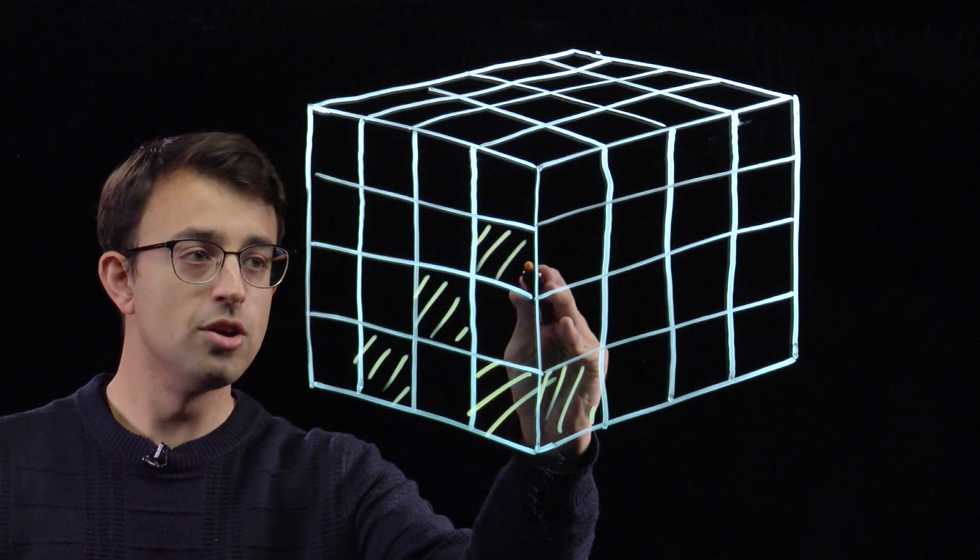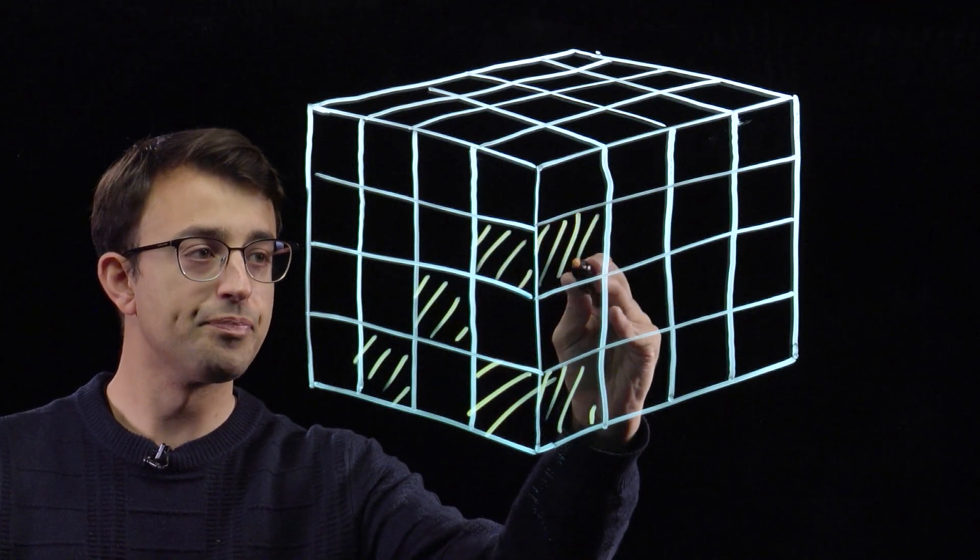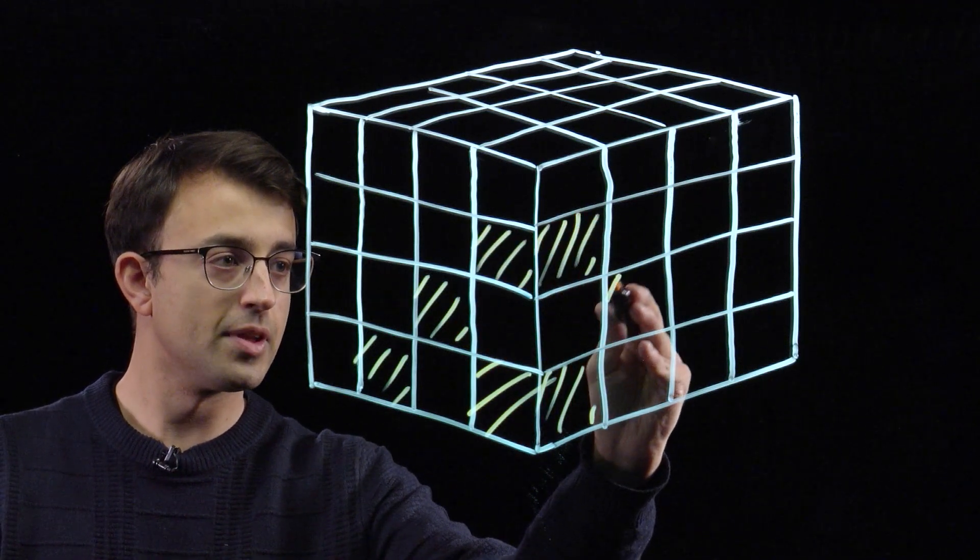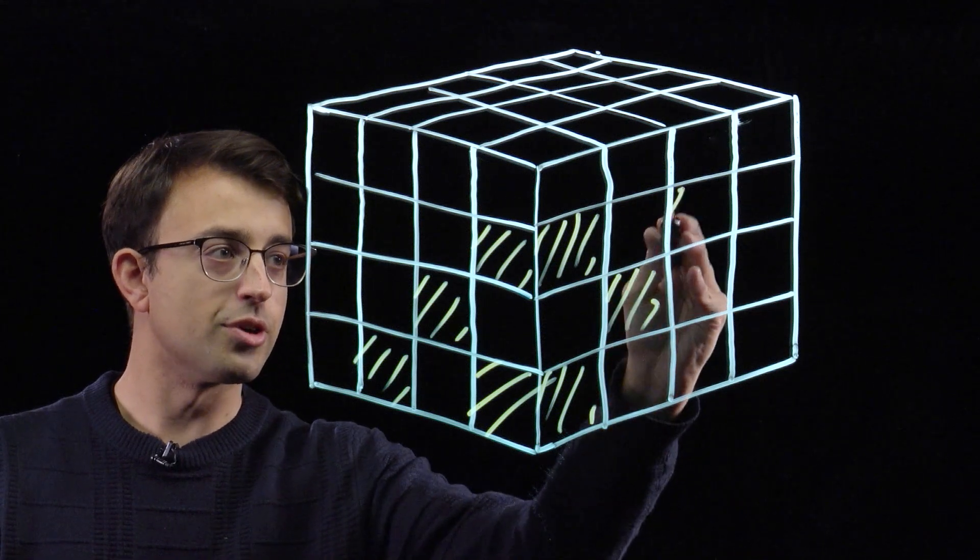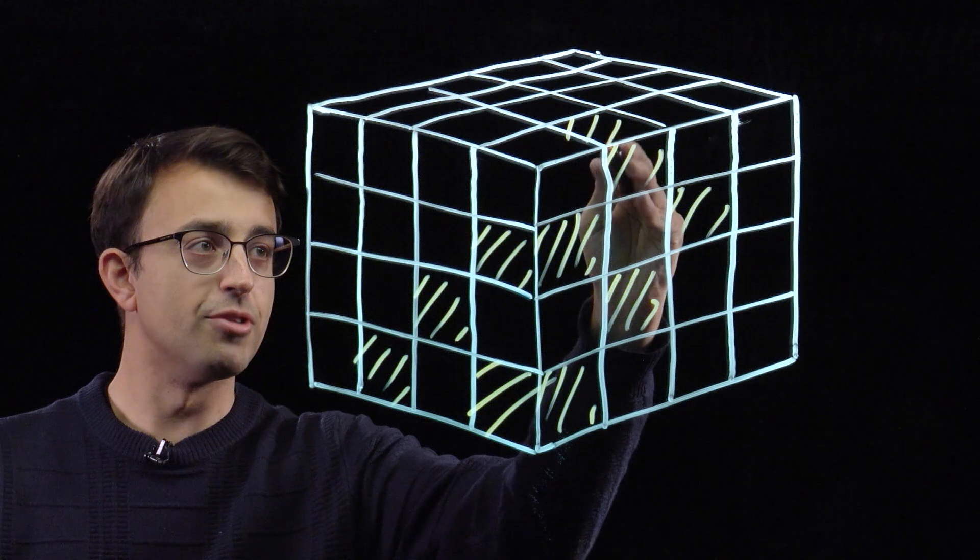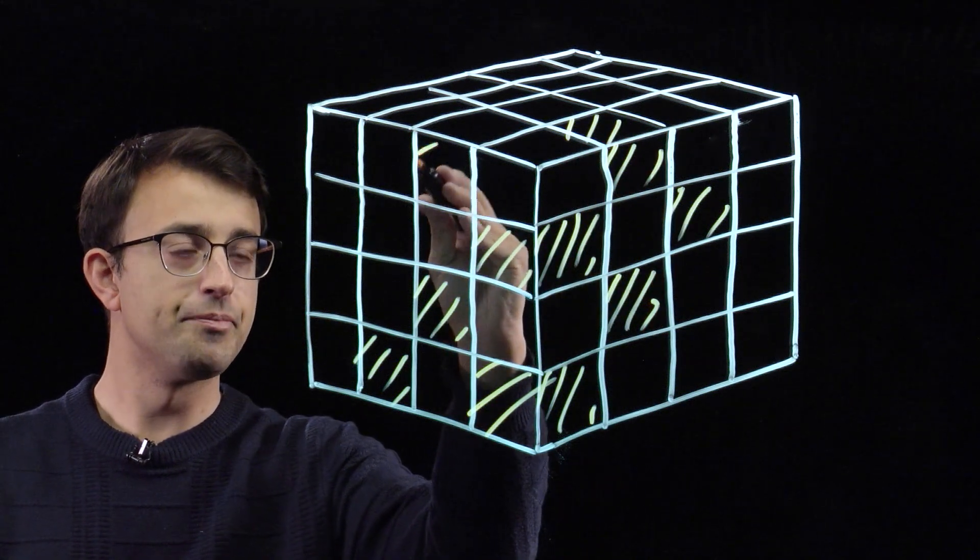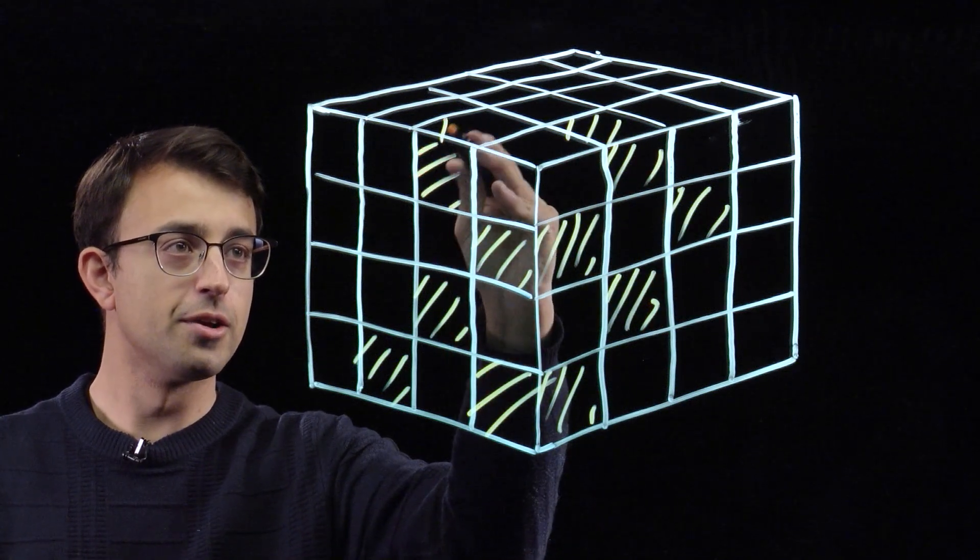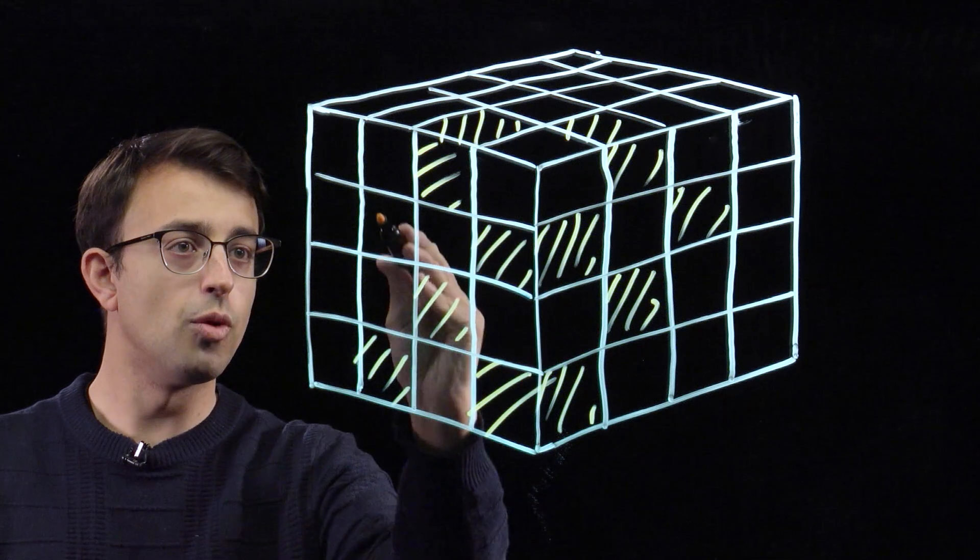We effectively do a chessboard colouring on each face. And you can imagine that the ones I'm colouring are Demerara in flavour, and the ones I'm not colouring are white.